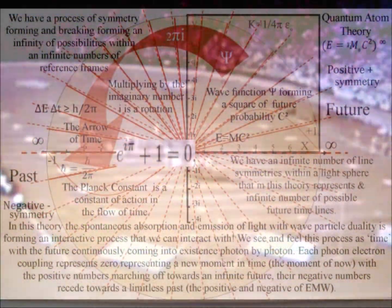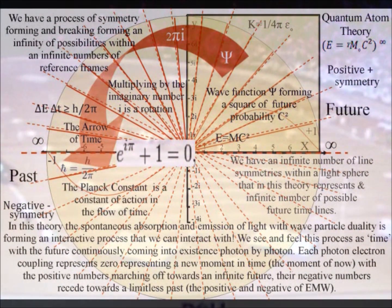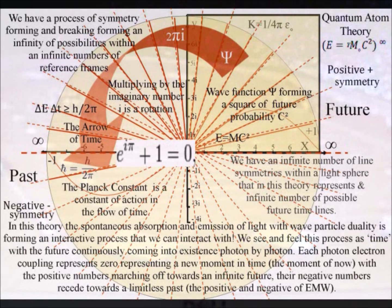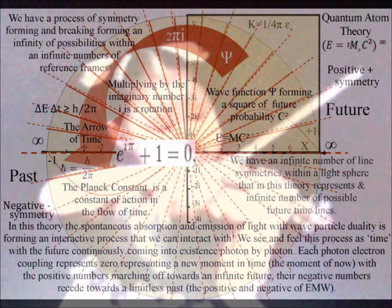We have this potential because there are an infinite number of lines of imagery within a sphere that in this theory represent an infinite number of potential future timelines that form an infinity of possibilities. Because of this process, life will only ever be an infinitesimal potential of what it could be, and that will always be so.